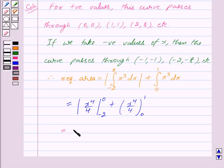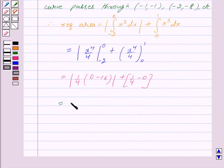This equals the modulus of 1/4... Putting the limits we get 0 minus 16. Putting upper limit 0 in place of x we get 0, minus putting lower limit -2 in place of x we get 16. Plus, putting the limits we get 1/4 minus 0. This equals the modulus of -16/4 plus 1/4.